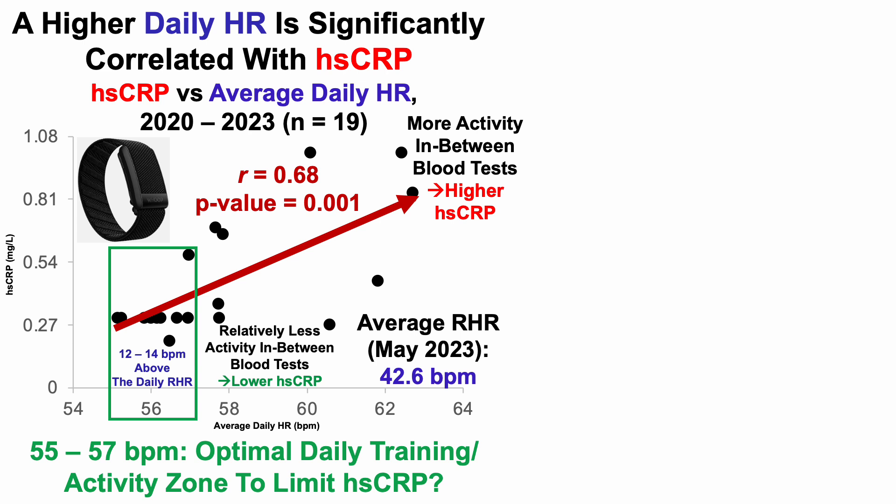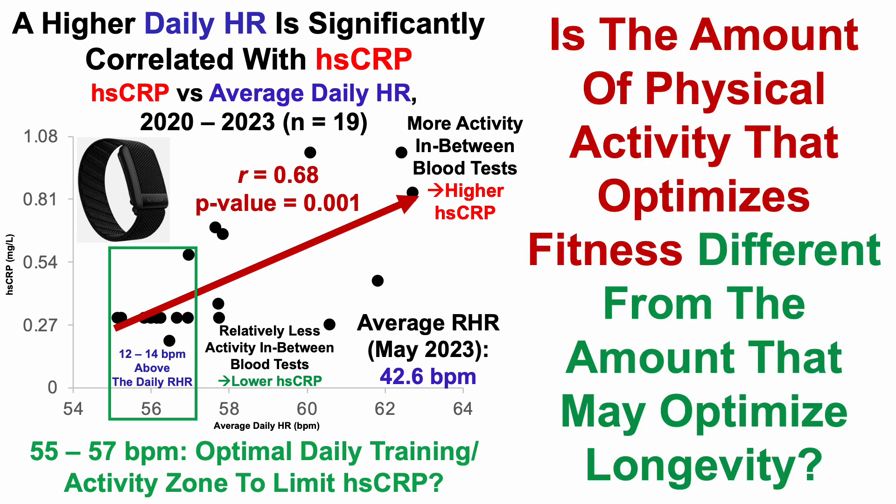I don't know if it's turmeric or minimizing activity while still trying to maximize fitness, but that's the story for HSCRP. It raises another question: is the amount of physical activity that optimizes fitness different from the amount that may optimize longevity? I can definitely train more, but considering that's significantly correlated with higher HSCRP, that may not be good for systemic health. Conversely, if I undertrain, that may not be good for fitness while potentially being good for HSCRP. So what's the dose that can optimize physical fitness while also maximizing blood biomarkers and potentially longevity? More on that in a future video.